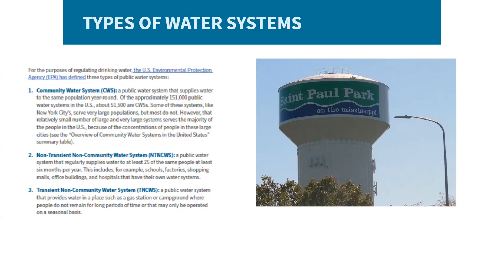Transient, non-community water systems are a public water system that provide water at places such as gas stations, campgrounds, etc., and may be seasonal and/or serve people who do not stay for long periods of time in the service area.